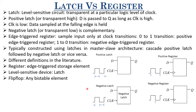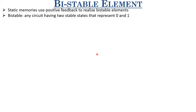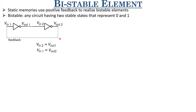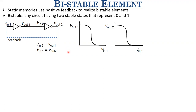We have been talking about bistable elements as the basic component for implementing static memories. Let us look at a very simple form of a bistable element, obtained by connecting two inverters and taking feedback from the output of the second back to the input of the first. The input is at V_in1, it goes to V_out1. V_out1 is the input of inverter 2, so V_in2 equals V_out1. Because of this feedback, V_out2 becomes the input of inverter 1, so V_in1 equals V_out2.